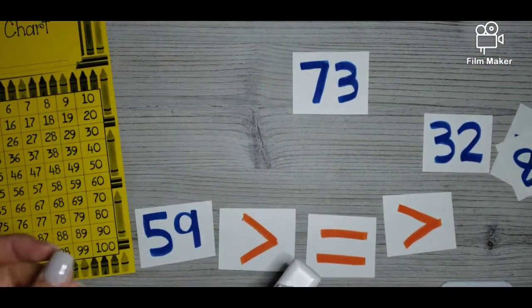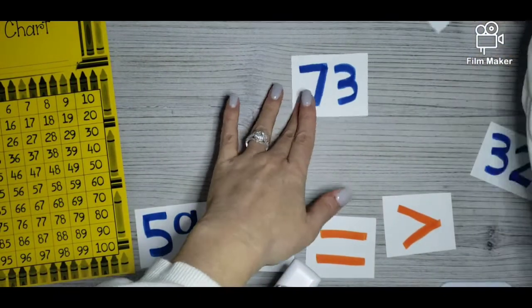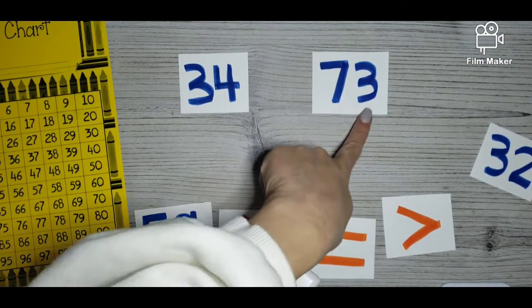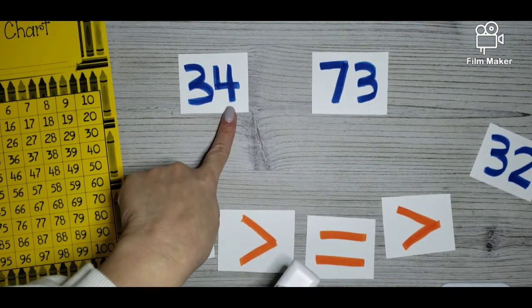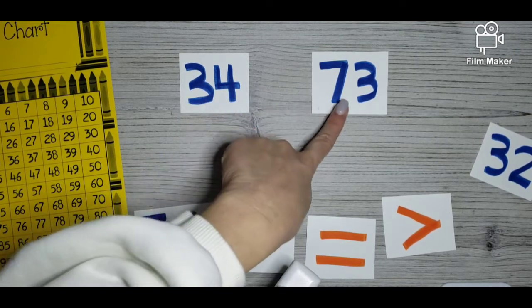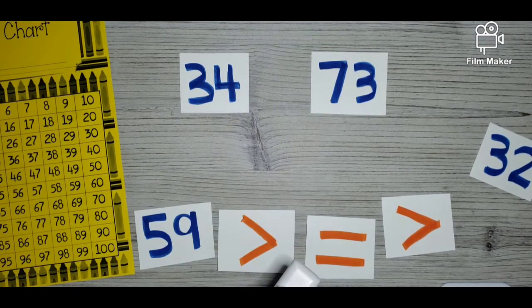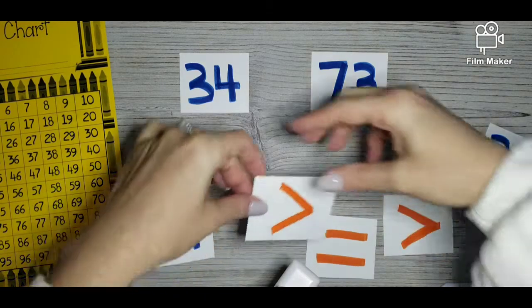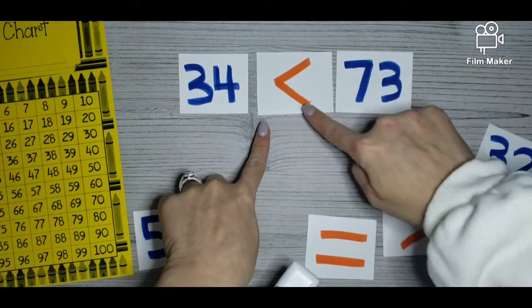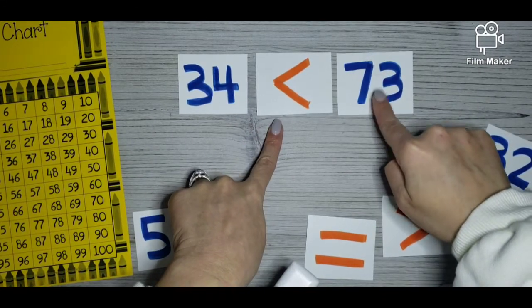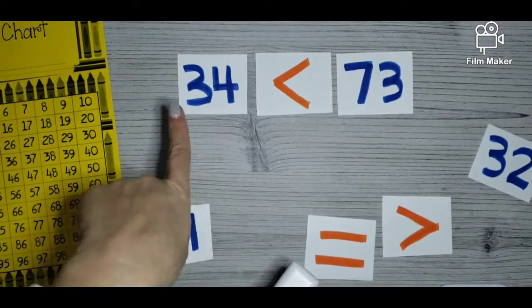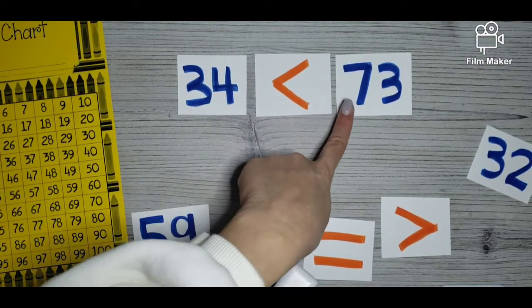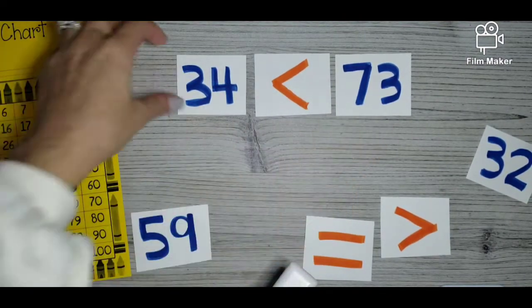We have 73 and 34. 73 and 34. If we're looking at that tens place, which one is the bigger number? Good. The seven is bigger. So we're going to take our alligator mouth and make sure that it is open to the 73 because that's the one we would want to eat. Read this with me. 34 is less than 73. Nice job.